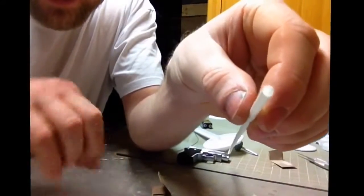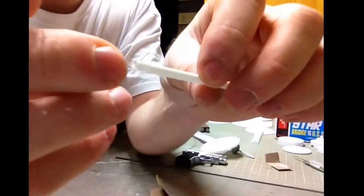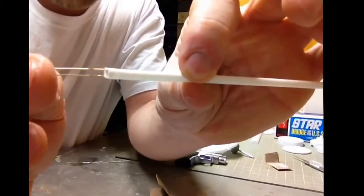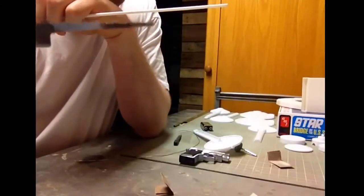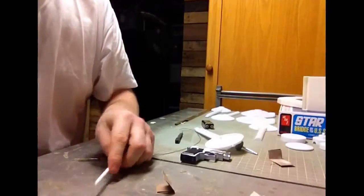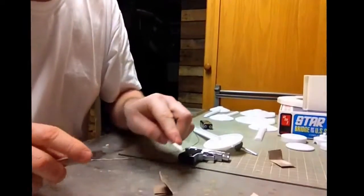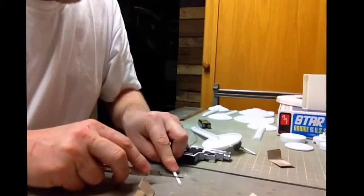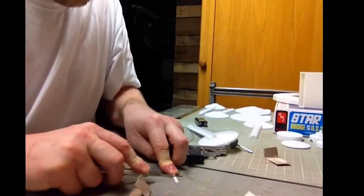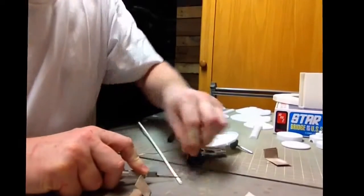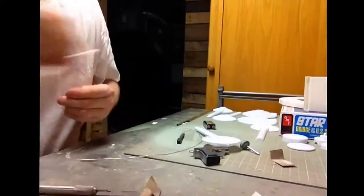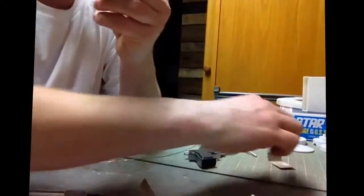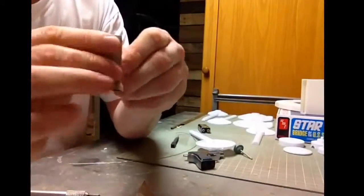You don't have to go too deep either because once you've reamed it out, the LED fits in there very nicely. Then I use an exacto handle with a little saw blade and I don't actually measure this, I just cut it where it feels right.